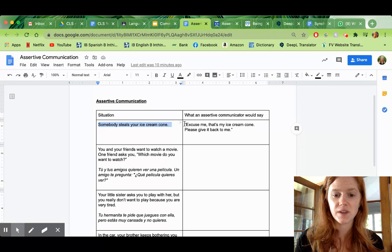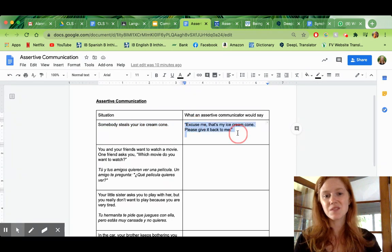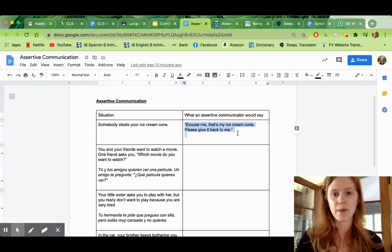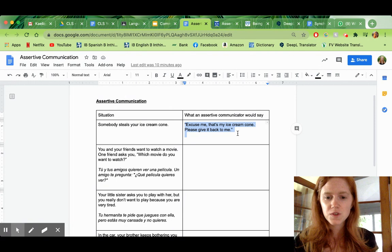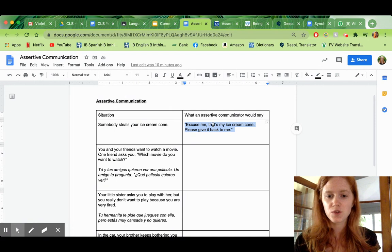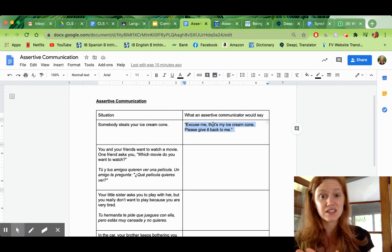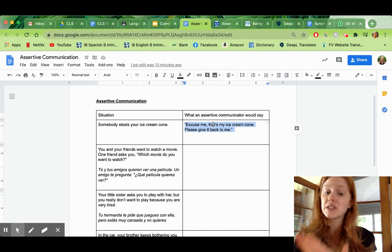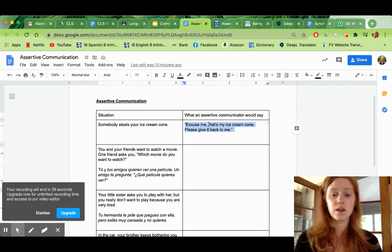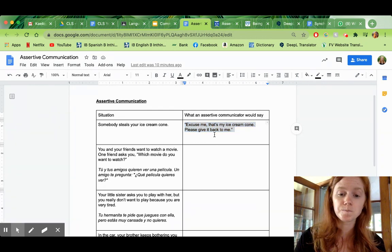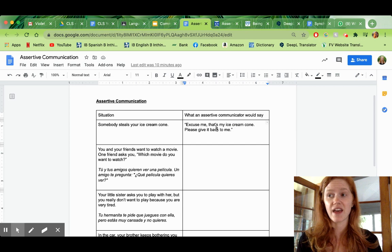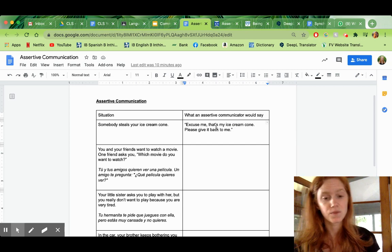Maybe they would say something like, excuse me, that's my ice cream cone. Please give it back to me. So, do you see how this shows respect? You know, it's polite. It says, please give it back. Excuse me. But at the same time, it's expressing what the person wants, which is they want their ice cream cone back.